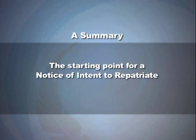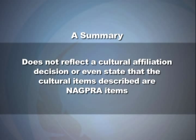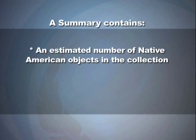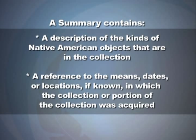A summary is a starting point for a Notice of Intent to Repatriate. A summary is a brief listing — not an item-by-item description — of the cultural items in the museum or agency's collection. It contains an estimated number of objects, reference to their geographical location, a description of the kinds of objects, reference to the means, dates, or locations in which the collection was acquired if known, and any other relevant information to identifying cultural affiliation.